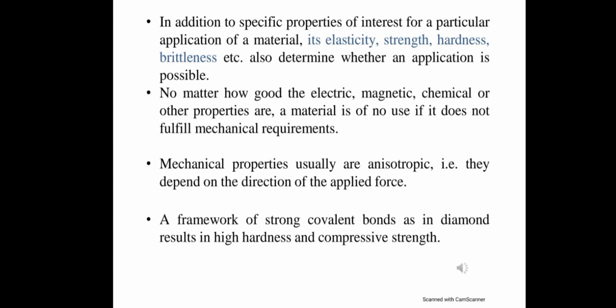For example, if a material has good electrical, magnetic, chemical, and other properties, but is not mechanically strong, then there is no use of those properties. Mechanical properties are usually anisotropic — they depend on the direction of applied force. A framework of strong equivalent bonds, as in diamond, results in high hardness and compressive strength. Diamond is very hard because of the presence of a framework of strong equivalent bonds.